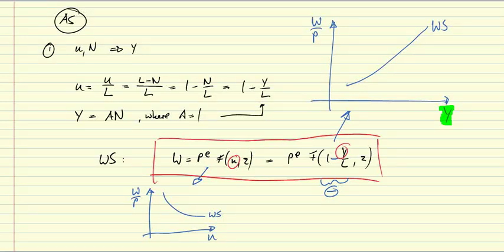So what I want to work with from now on in order to derive the AS curve is the expression in terms of output. So that's the first step from unemployment or from employment to output in the wage setting relationship.